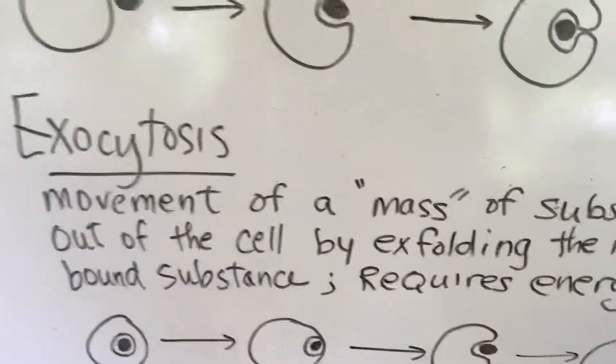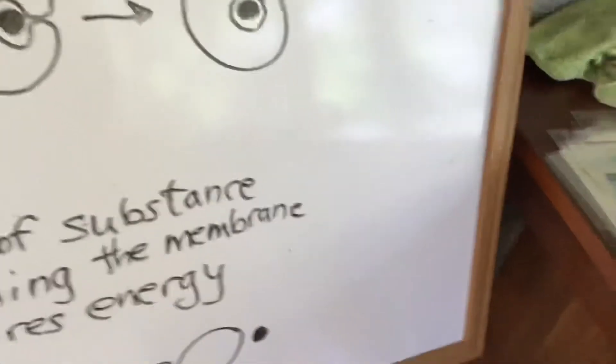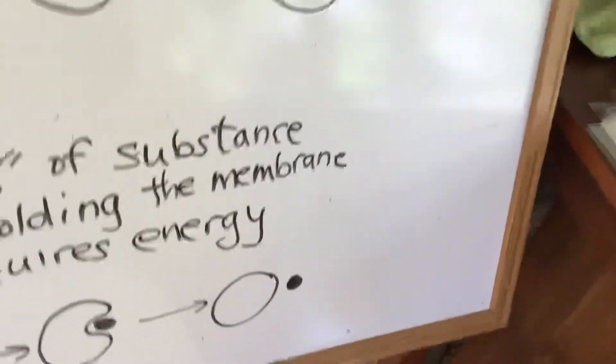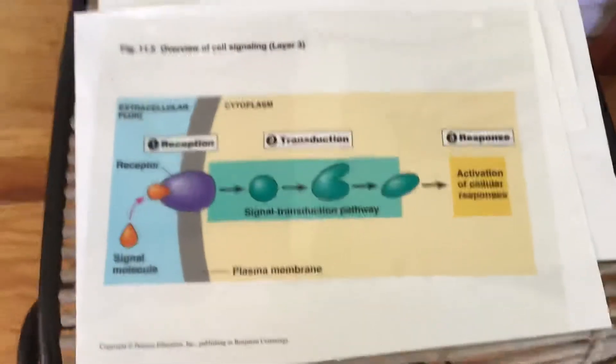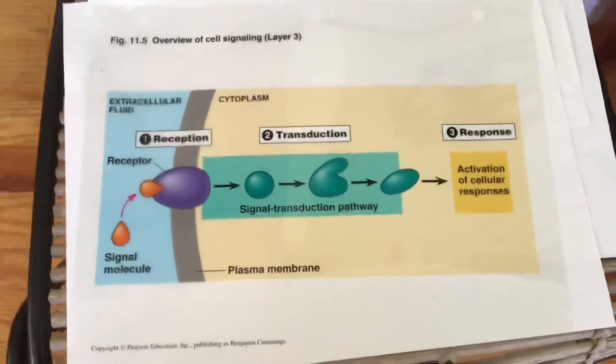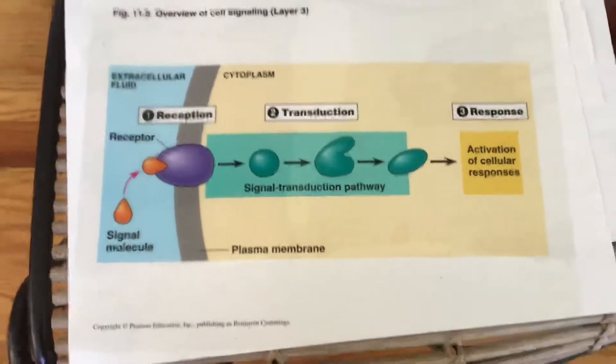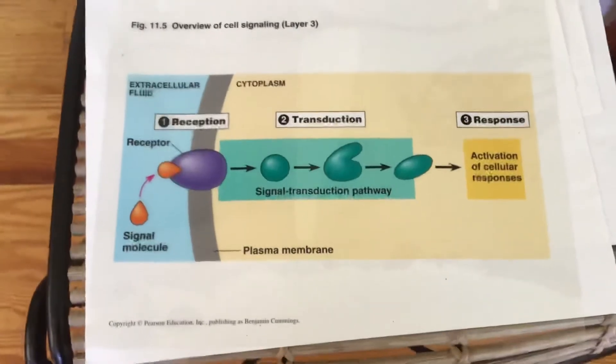Lastly for this section, there is this that we want to talk about. This is what we call cell signaling. Now this is all in chapter 11. And in chapter 11 it gives you many examples of this. I don't want you to memorize all the examples or read with a fine tooth comb chapter 11, but I do want you to look it over and know this basic diagram.